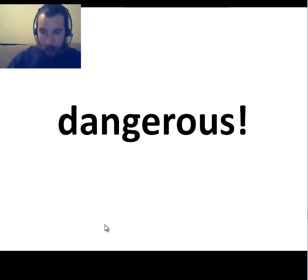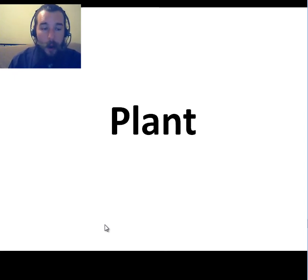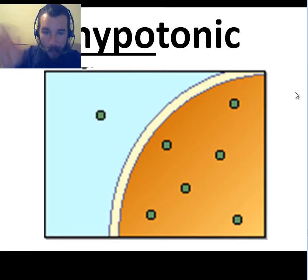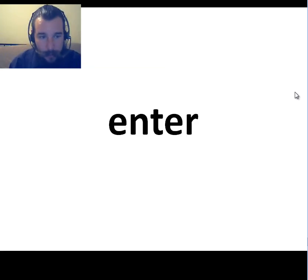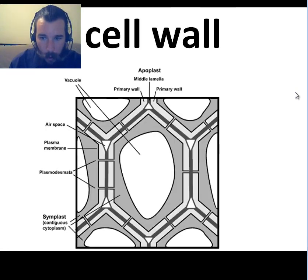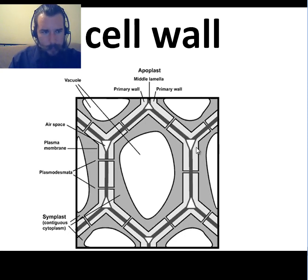Plant cells, on the other hand, are adapted to be in a hypotonic solution — lower concentration outside. In this solution, water will enter the cell. Unlike animal cells, plant cells have the cell wall around their outside, making a nice stiff rigid structure, giving it a nice structure with its angles.